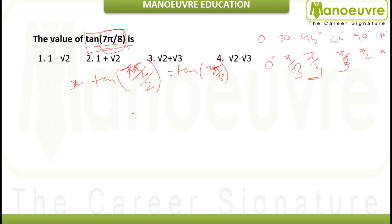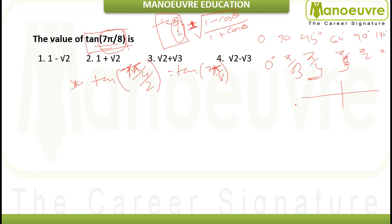The half-angle formula is: tan(θ/2) = ±√((1 − cos θ)/(1 + cos θ)). We need to determine the sign. Since 7π/8 lies in the second quadrant, by 'All Smart Trigo Classes', tan is negative in Q2. So we use the negative sign. Now we evaluate cos(7π/4): 7π/4 lies in Q4 where cosine is positive, and it corresponds to π/4, so cos(7π/4) = cos(π/4) = 1/√2.